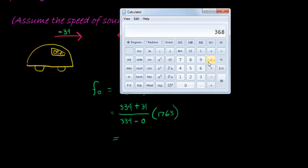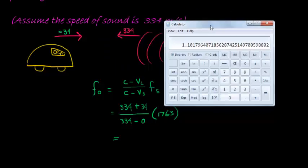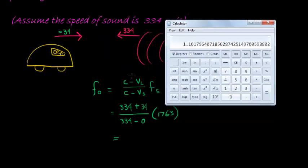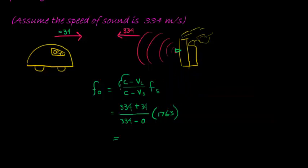Denominator will simplify to simply 334 since we are not subtracting anything and this gives us our percentage. Remember what I mentioned in a previous video is that this part is the percentage of the original frequency that we hear. Since we are driving into the sound we are going to hear more waves per second than if we were just standing still.